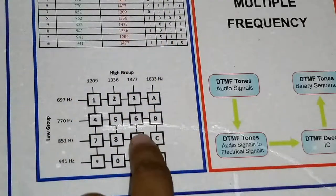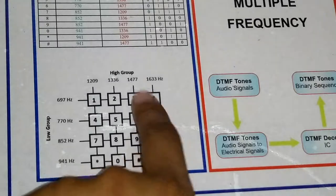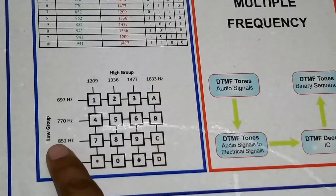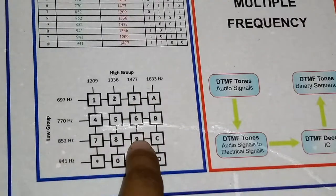If I press 9, then the high group frequency is 1477 Hz and the low group frequency is 852 Hz. These two frequencies will match and the digit 9 is decoded.